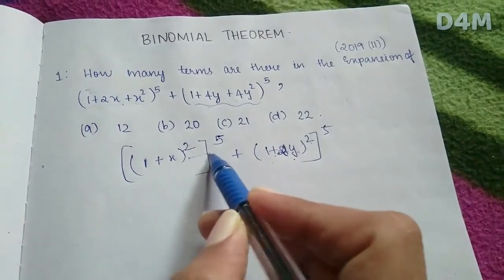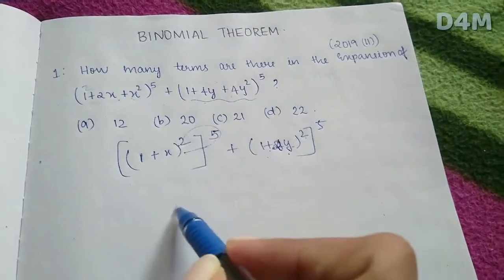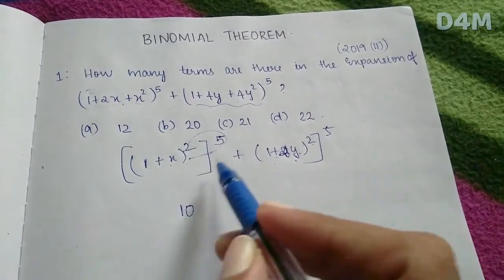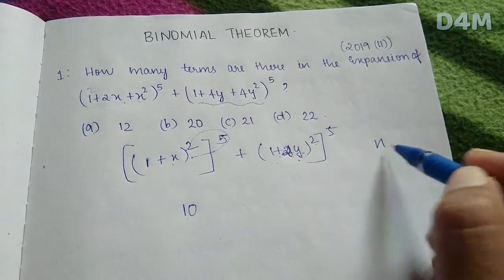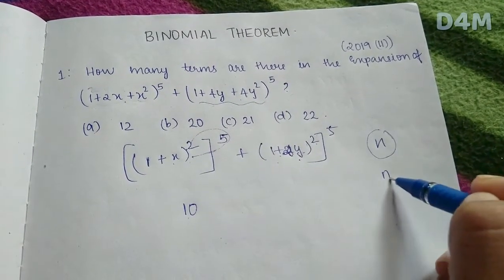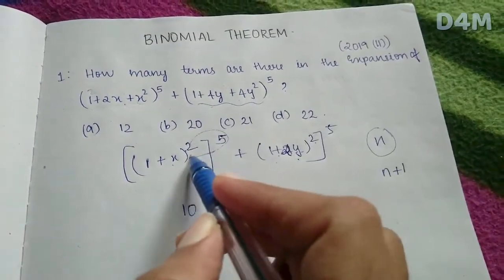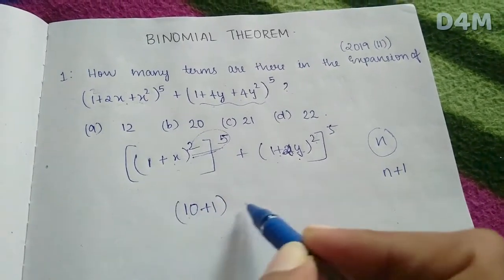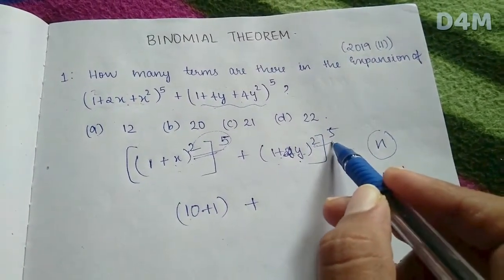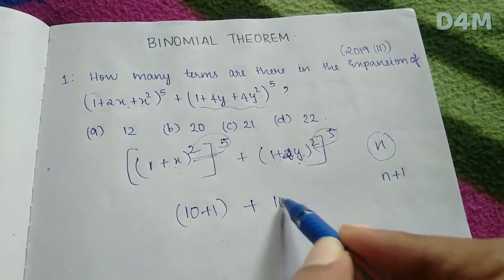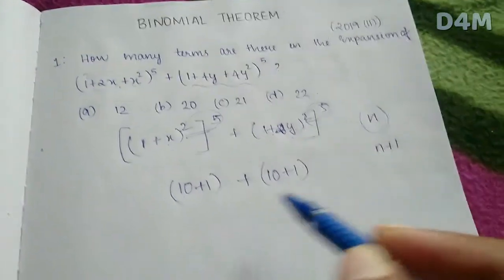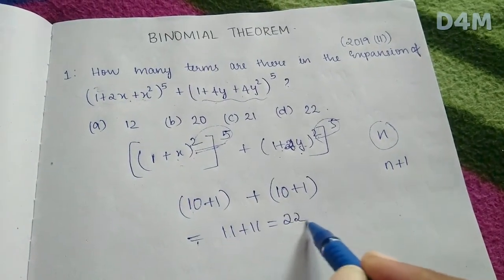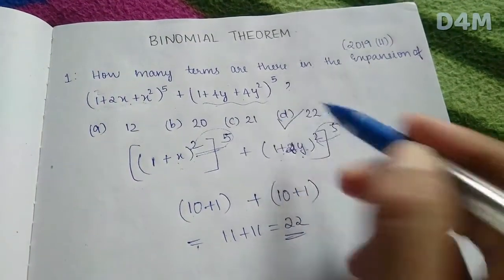How many terms? That is 2 into 5 = 10. We have 10 terms here, which means 10 + 1 = 11 terms for each expansion. So 11 + 11 = 22. Option D is correct.